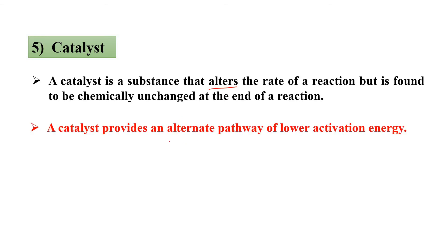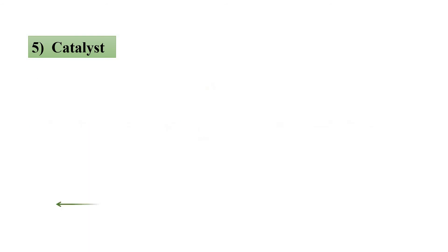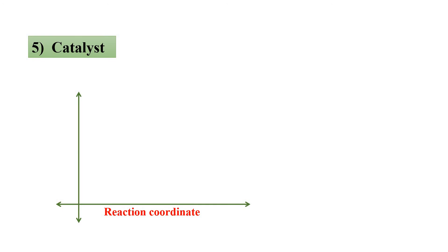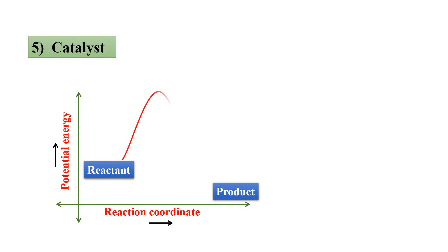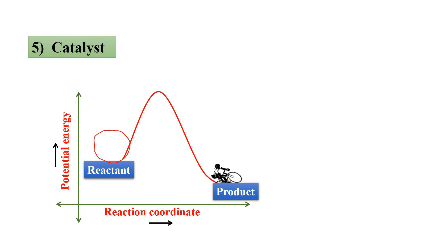Generally, a catalyst will provide an alternate pathway with lower activation energy. Let me explain with a diagram. On the x-axis I have taken reaction coordinate — reactant at first, product at last. On the y-axis I have taken potential energy. The reactant converts into product, but for this, the reactant must reach threshold energy. This reactant wants to convert into product, so it must reach threshold energy — only then will you get the product.